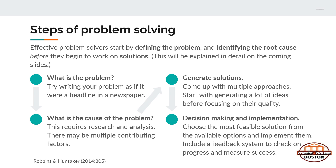For a shorthand version, ask yourself: what is the problem? To narrow it down as clearly as possible, try writing the problem as if it were a headline in a newspaper. Then ask what is the cause of the problem — this requires research and analysis, as there can be multiple contributing factors. After you've understood the problem fully, generate solutions. Come up with multiple approaches. The more ideas you generate, the better chance you have of finding a good one. Focus on quantity over quality at first, and then once you have a lot of ideas, narrow them down.